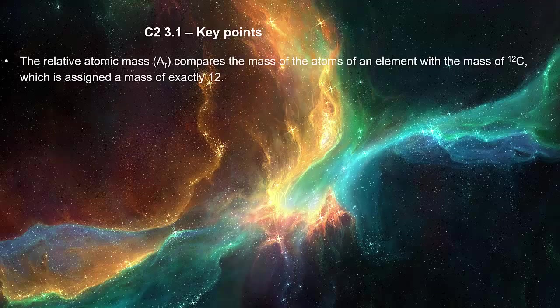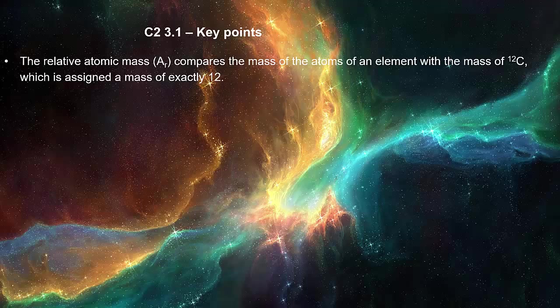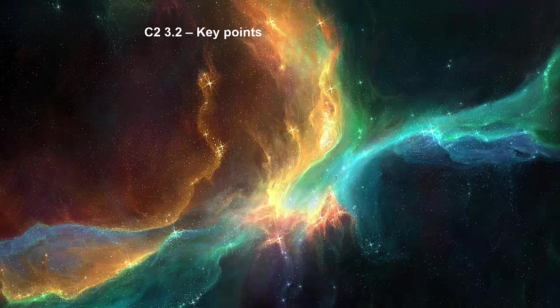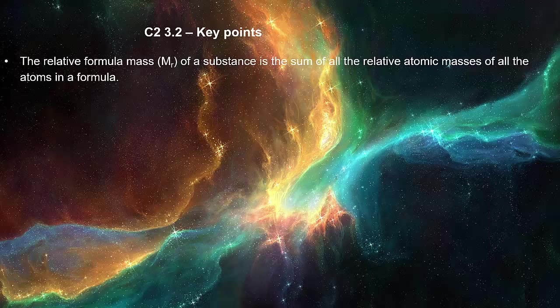The relative atomic mass, Ar, compares the mass of the atoms of an element with the mass of 12C which is assigned a mass of exactly 12. The relative formula mass, Mr, of a substance is the sum of all the relative atomic masses of all the atoms in the formula.